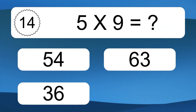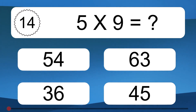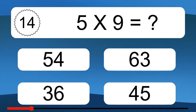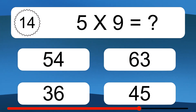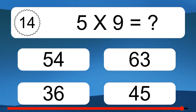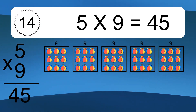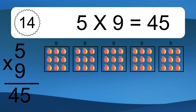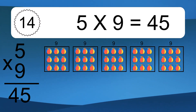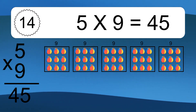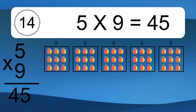Five times nine equals what? Five times nine equals 45. We have five boxes, and each box has nine colorful balls inside. If you count all the balls in all the boxes together, you will have 5 times 9 balls. This equals 45 balls.